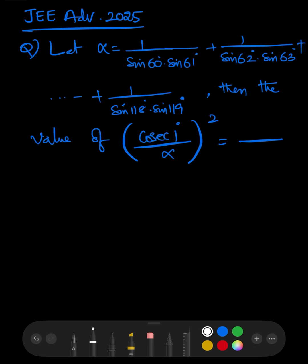The question itself gives a clarity that the difference between successive angles is 1 degree — in each and every term, if you observe, the difference between them is 1. And in the question they ask about cosecant 1 degree, so there is a need of cosecant 1 degree here.